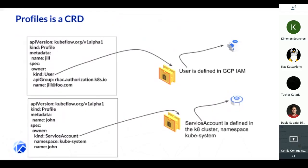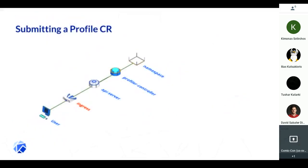Here is an example of the profiles we have. There are two users — Jill and John. One is in GCP IAM and another has just a service account. They end up having two different namespaces, technically working on two different assignments. But later on, they can decide to share their workspace. It's completely up to the namespace owner, which in this case is the data scientist.